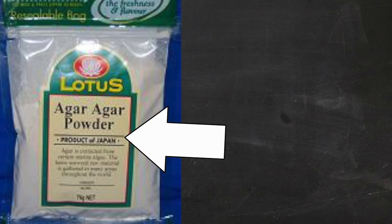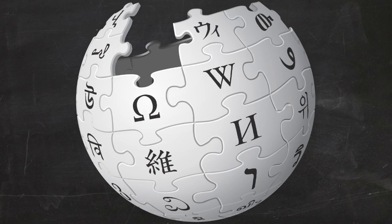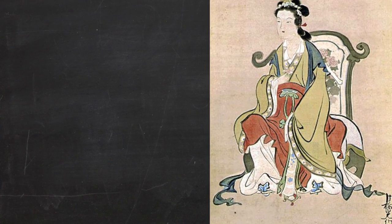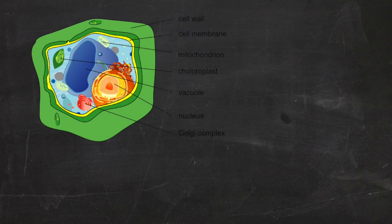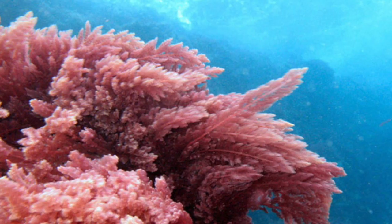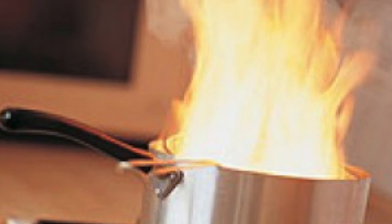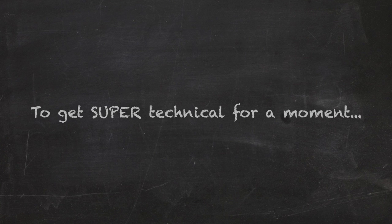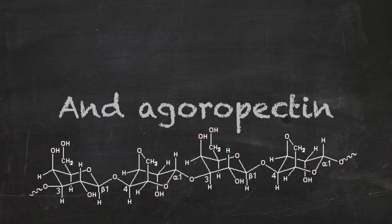You may or may not know what agar actually is. You may have seen it in the list of ingredients of a food. It's like a jelly substance that works like gelatin but quite a bit better. According to Wikipedia, it was discovered in 1658 Japan and it is obtained from algae. It is taken from a material that builds the cell walls in certain kinds of red algae, specifically Gracilaria. It is released from the algae by boiling it. To get super technical for a moment, it is composed of linear polysaccharide agarose and agaral pectin.